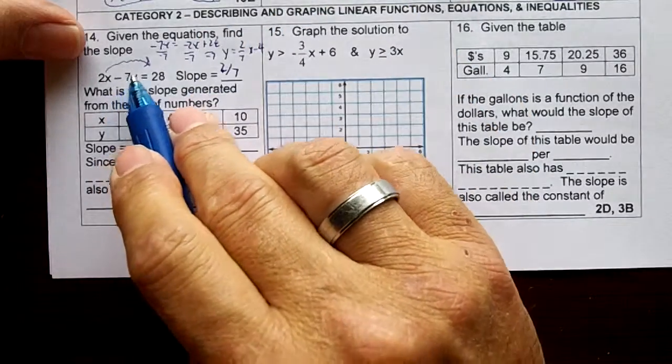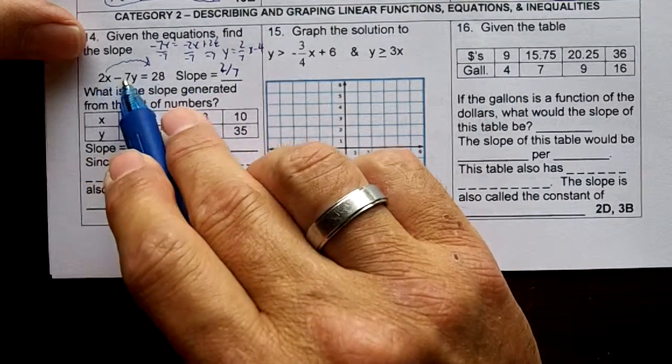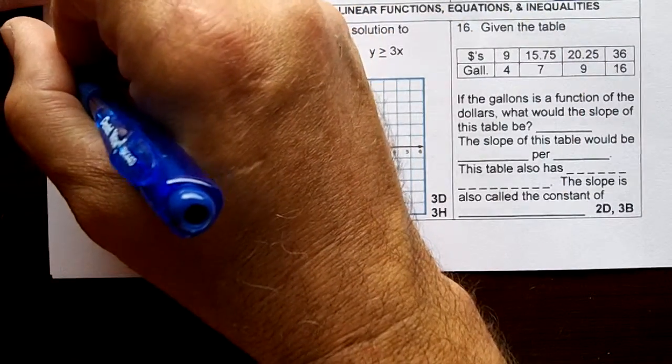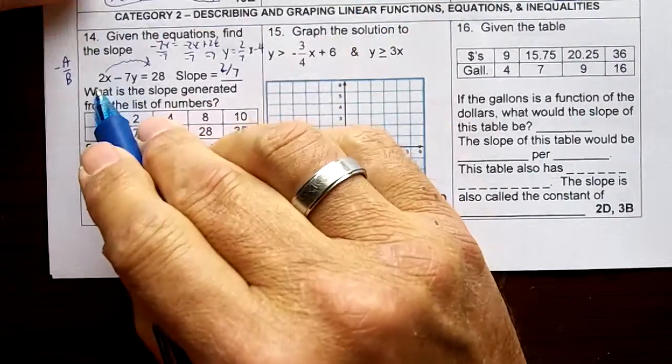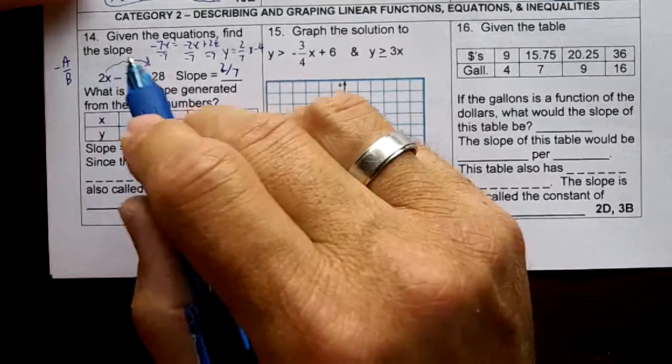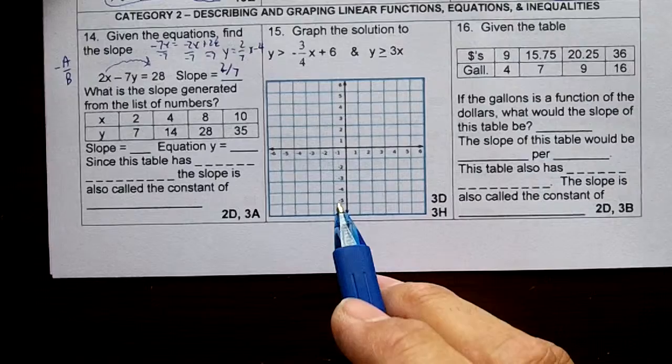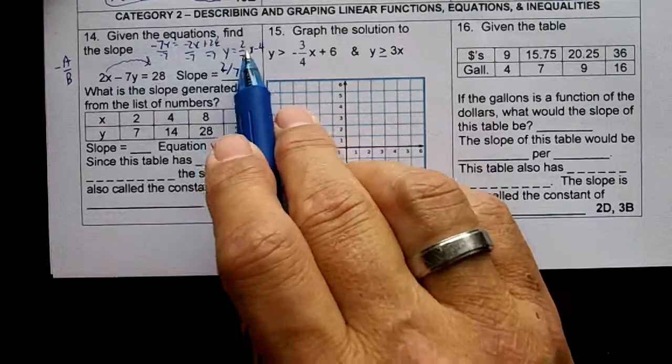Remember also, you could put the b over a. Your slope would be negative a over b. In standard form, if you put a over b and the negative of that, 2 over negative 7, the negative of that would also be positive 2 over 7.